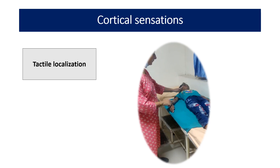For tactile localization, we simultaneously touch two body parts. If the child is able to perceive two stimuli simultaneously, we can touch using cotton or a finger. In this video, you can see I am touching the face and upper limb simultaneously. We can also touch both limbs simultaneously — right and left — or touch the face and any limb. This is tactile localization.